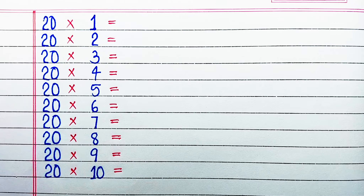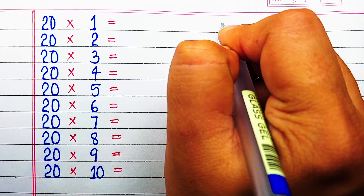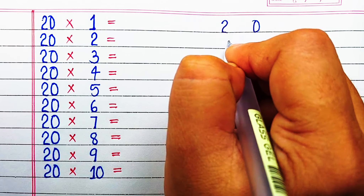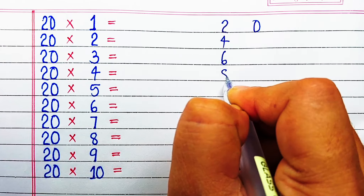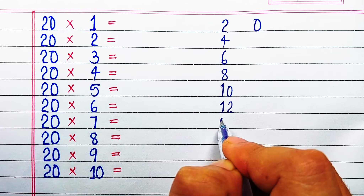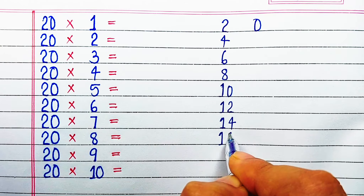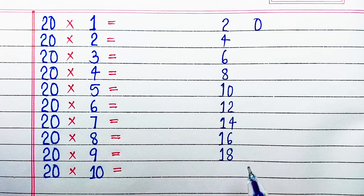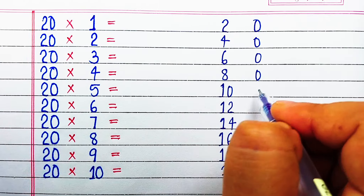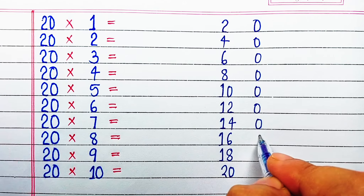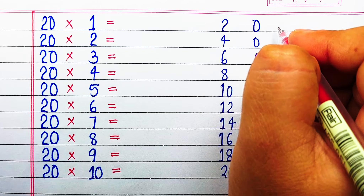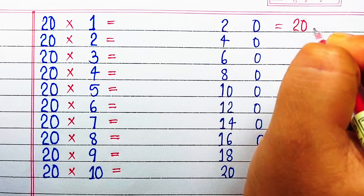Now let's learn the trick to remember the table of 20. Here on the left hand side we will write the table of 2: 2×1=2, 2×2=4, 2×3=6, 2×4=8, 2×5=10, 2×6=12, 2×7=14, 2×8=16, 2×9=18, 2×10=20. To the right we will add 0s to all the rows. Now we will combine both the numbers of left and right, and this gives us the table of 20.